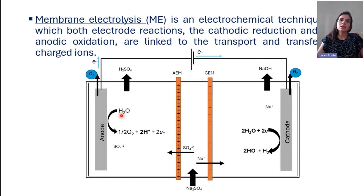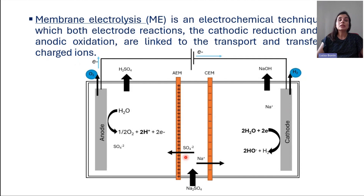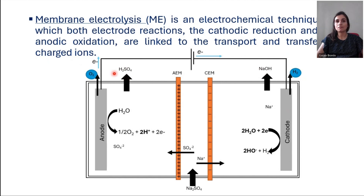A bit more complex, my third example is membrane electrolysis — you will have a whole presentation on it later. In membrane electrolysis, we have the reduction and oxidation of water happening at the anode and cathode, but we also use membranes. These membranes can select whether cations or anions will cross. For example, AEM stands for anion exchange membrane and CEM stands for cation exchange membrane — only anions will cross one and only cations will cross the other. With several membranes you can do separations, and your sodium sulfate, for example, could become sodium hydroxide and sulfuric acid.